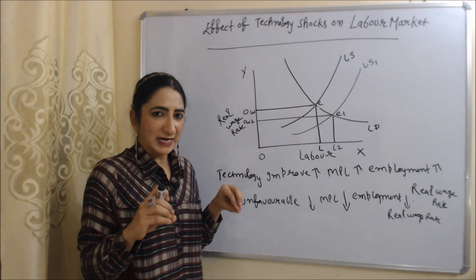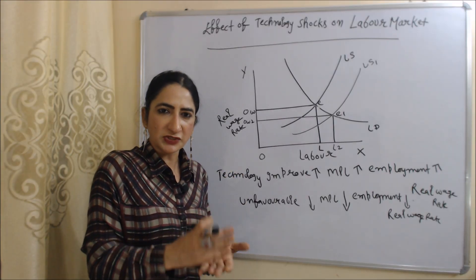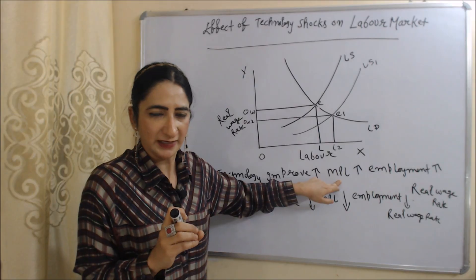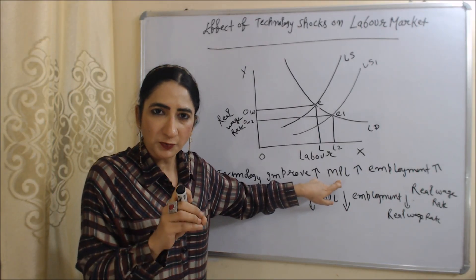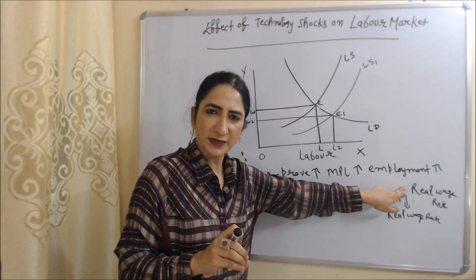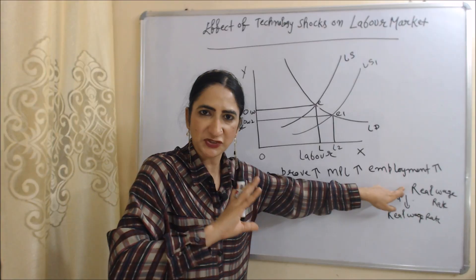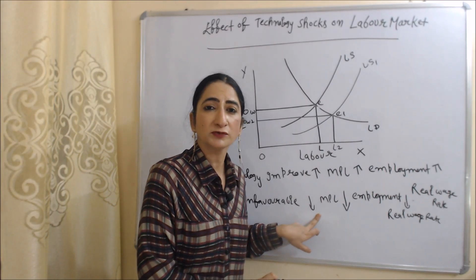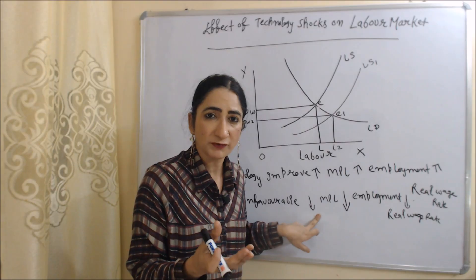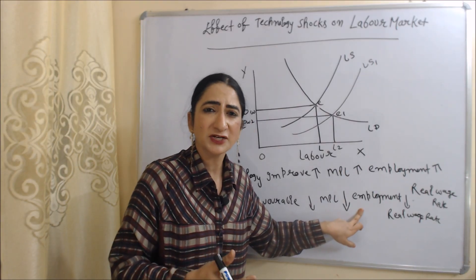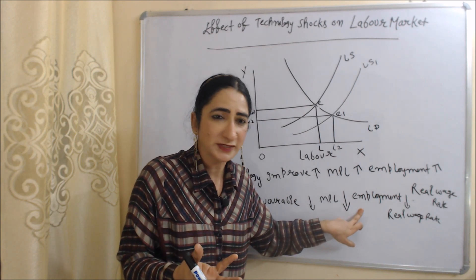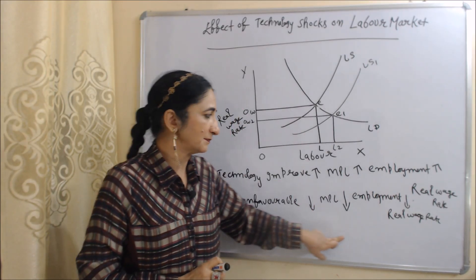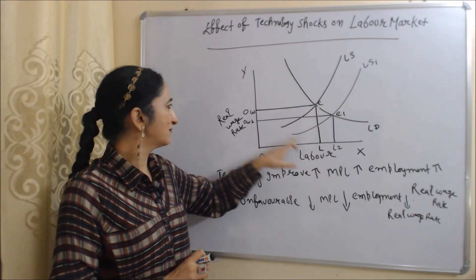With the help of this diagram we will understand the effect of technology shocks on the labor market. When technology improves, marginal productivity of labor becomes high because we produce more output with fewer workers — as a result, employment and real wage rate increase and the economy moves toward expansion. On the other hand, when technology is unfavorable, marginal productivity of labor is very low; we use more labor but produce less output, so employment and real wages fall, moving the economy toward recession.